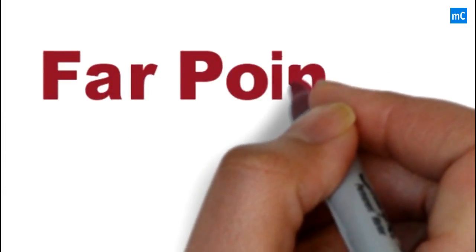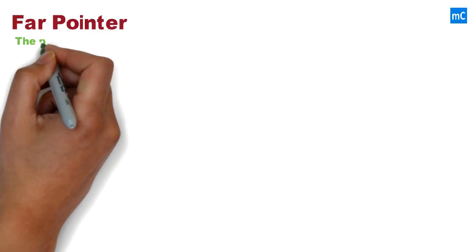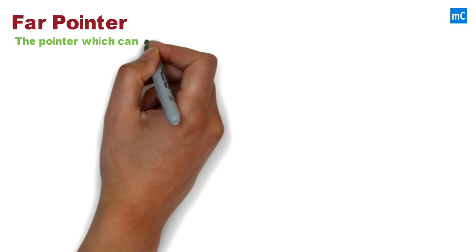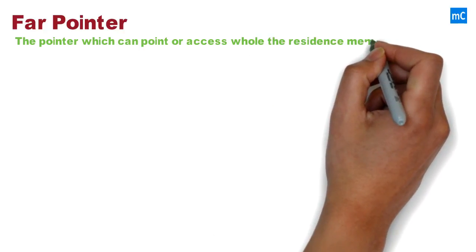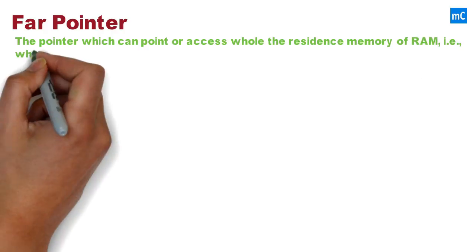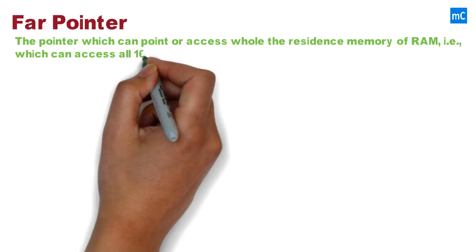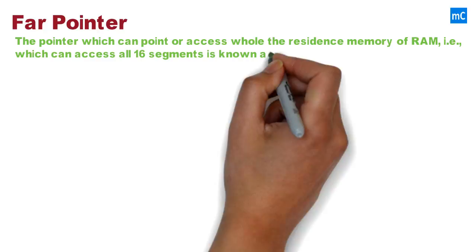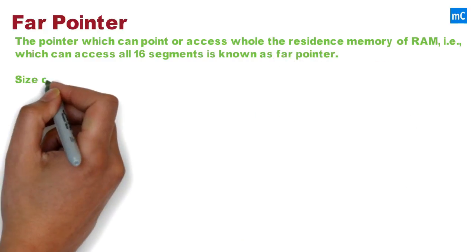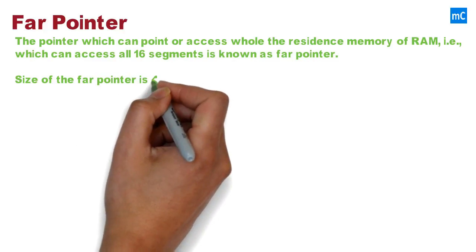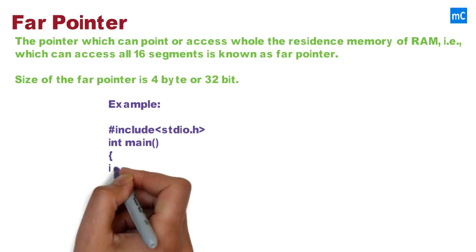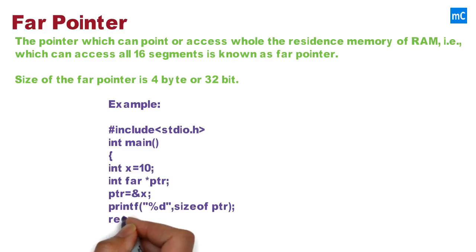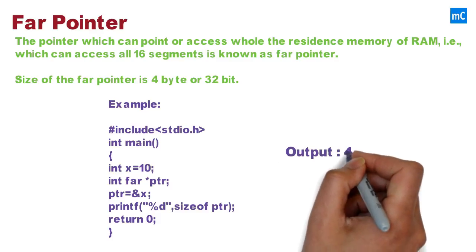Next we will move to far pointer. A far pointer is a pointer which can access all 16 segments — that is, it can access the entire residence memory of RAM. The size of a far pointer is 4 bytes or 32 bits. In this example, the pointer ptr is declared with the keyword 'far'. As we know the size of the far pointer is 4 bytes. Next we will move to huge pointer.